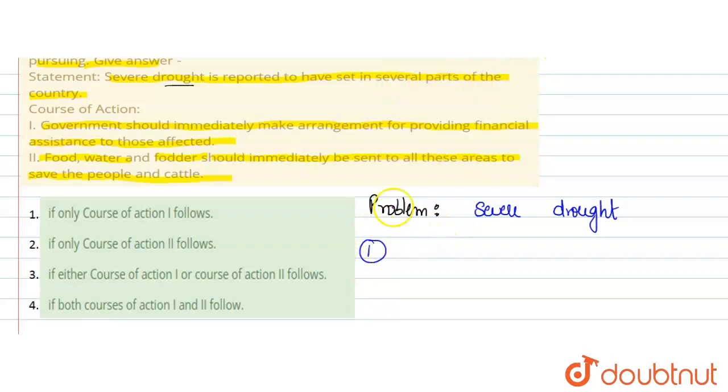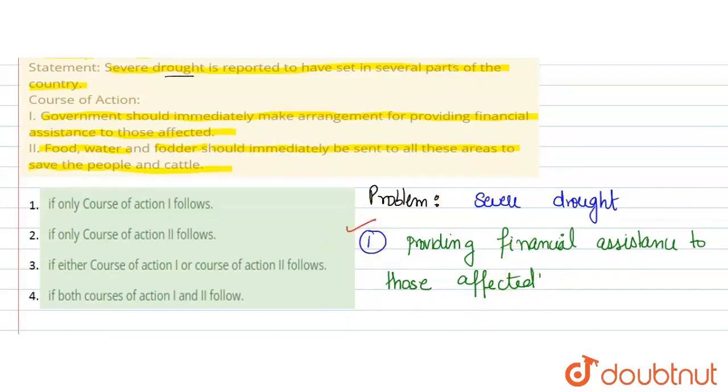Now first course of action - providing financial assistance to those affected. जो effect हुए हैं उनको आप financially help कीजिए तो इससे देखे problem minimize हो। सूखा पड़ गया है, पैसा रहेगा तो चीजें arrange कर पाएंगे। So this will minimize the problem. Then next statement.